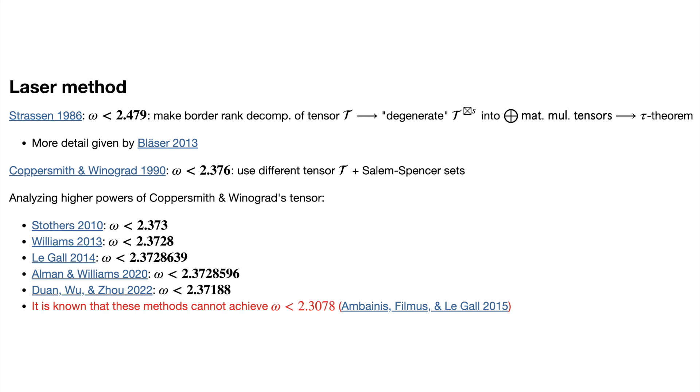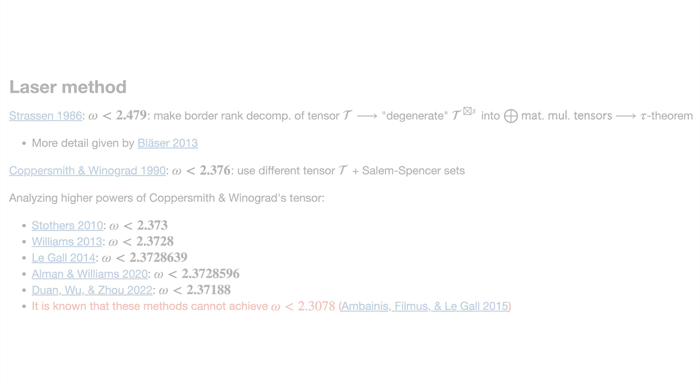The main reason why most of these algorithms are impractical is because they rely on decompositions of extremely large matrix multiplication tensors. Because of this, some people have stayed focused on finding exact decompositions of small to moderately sized tensors.